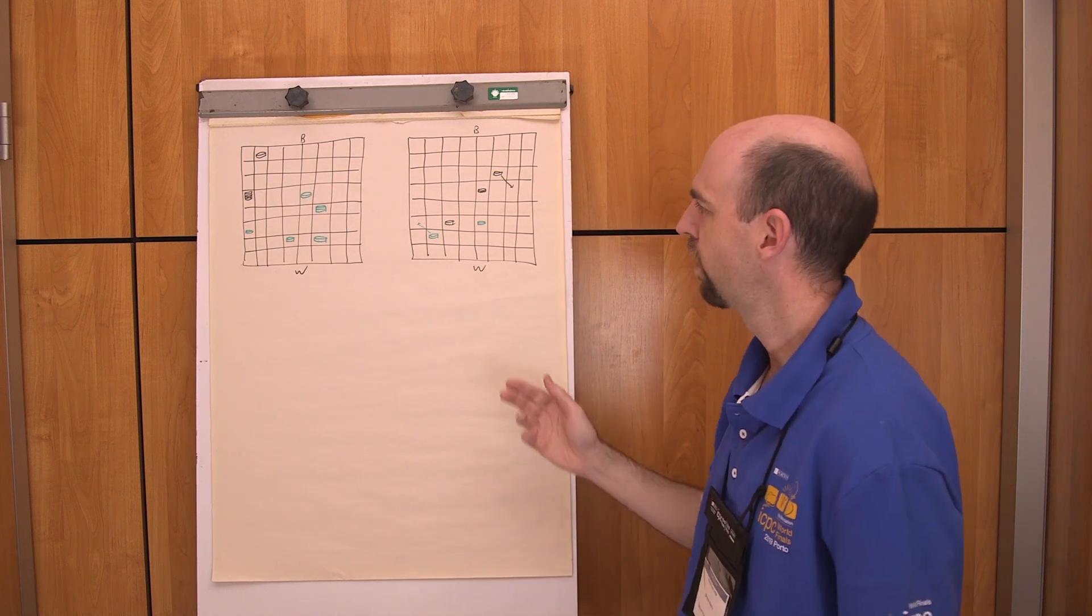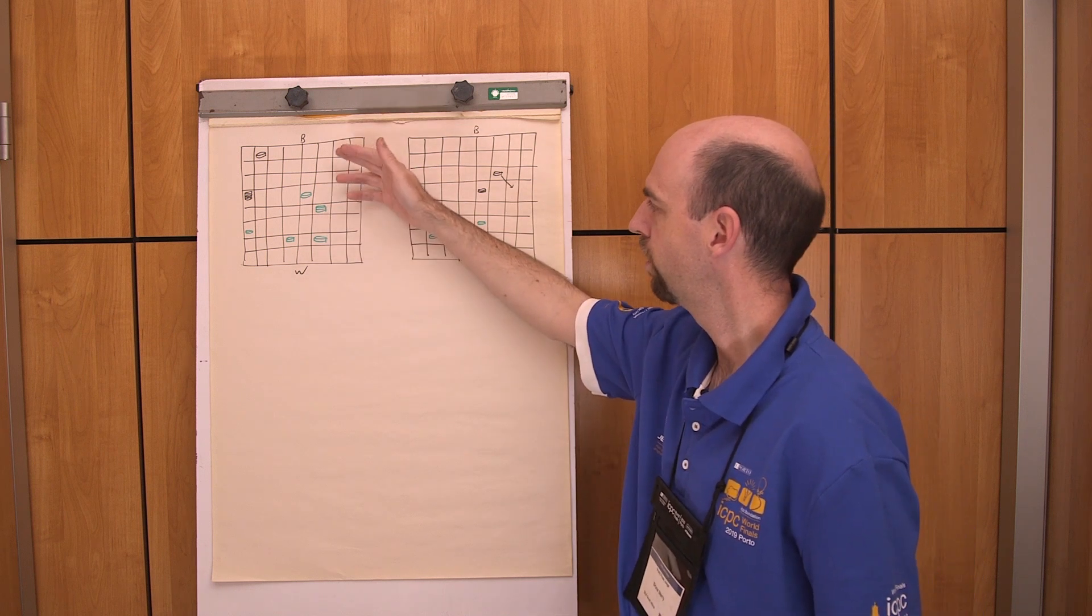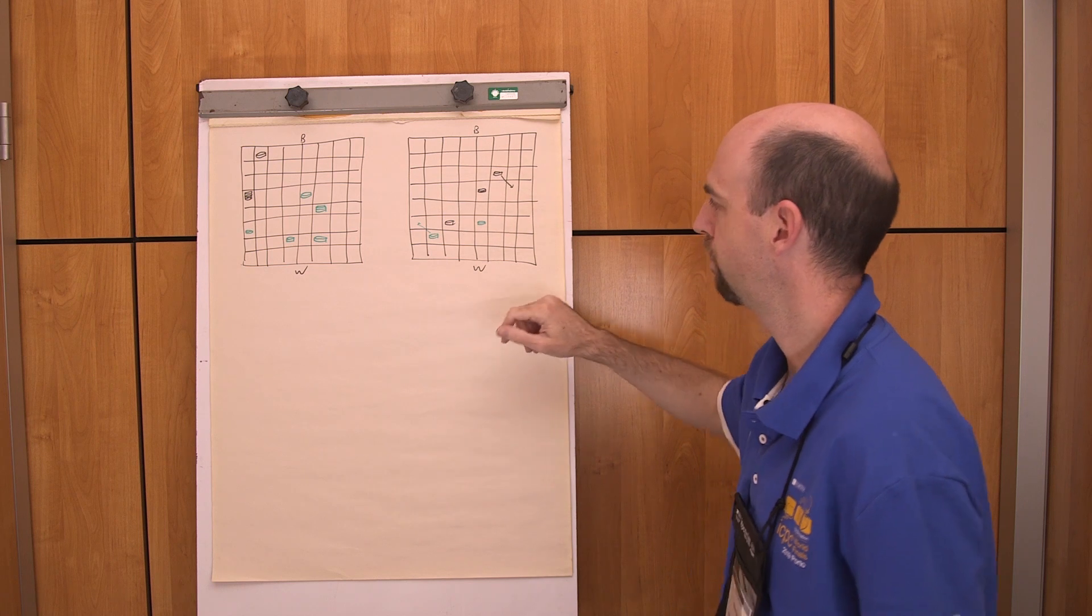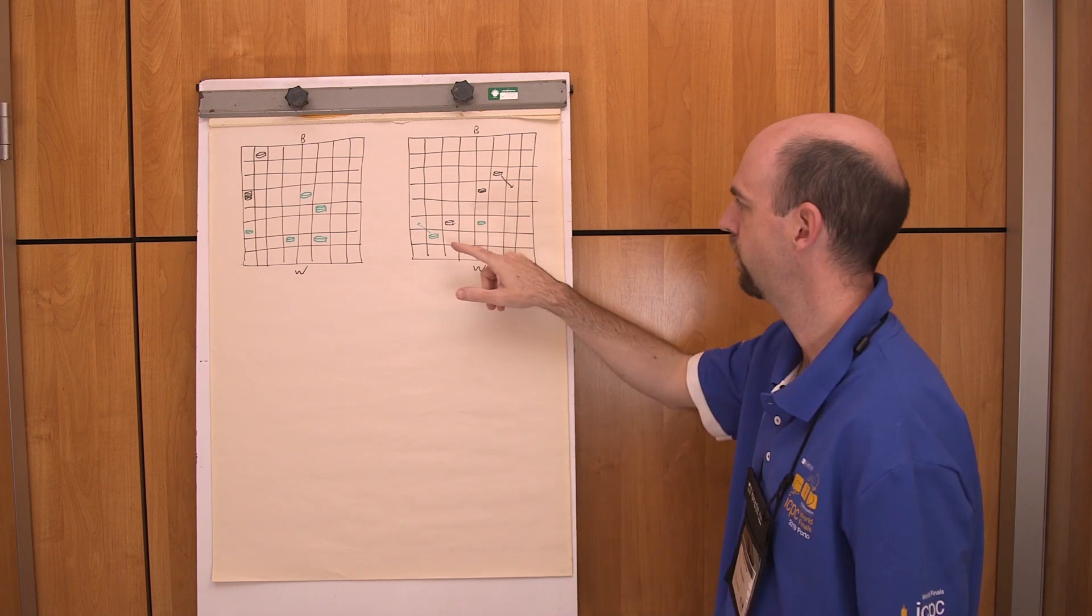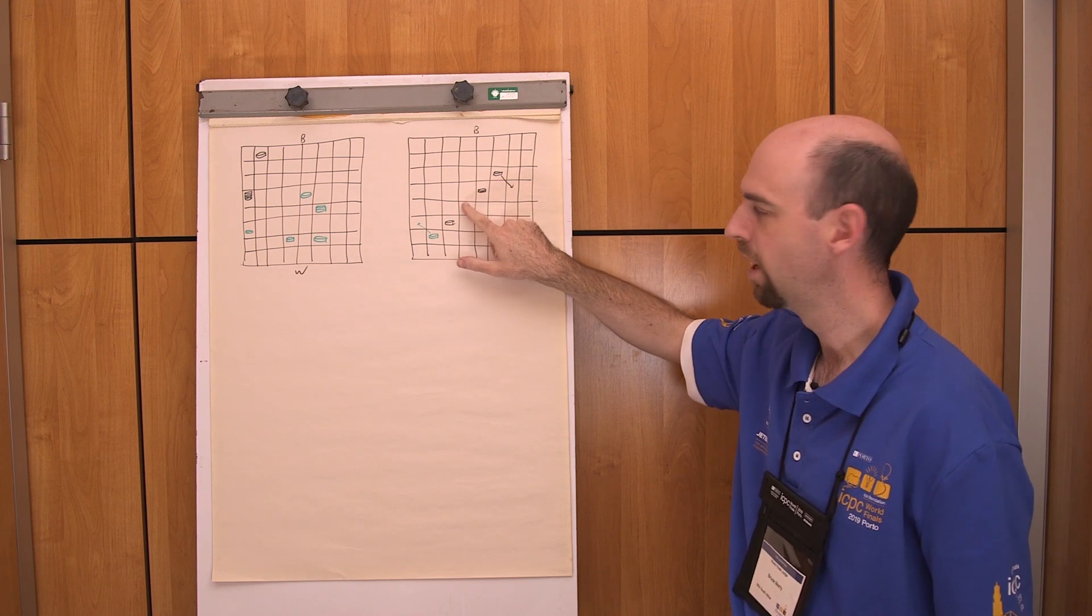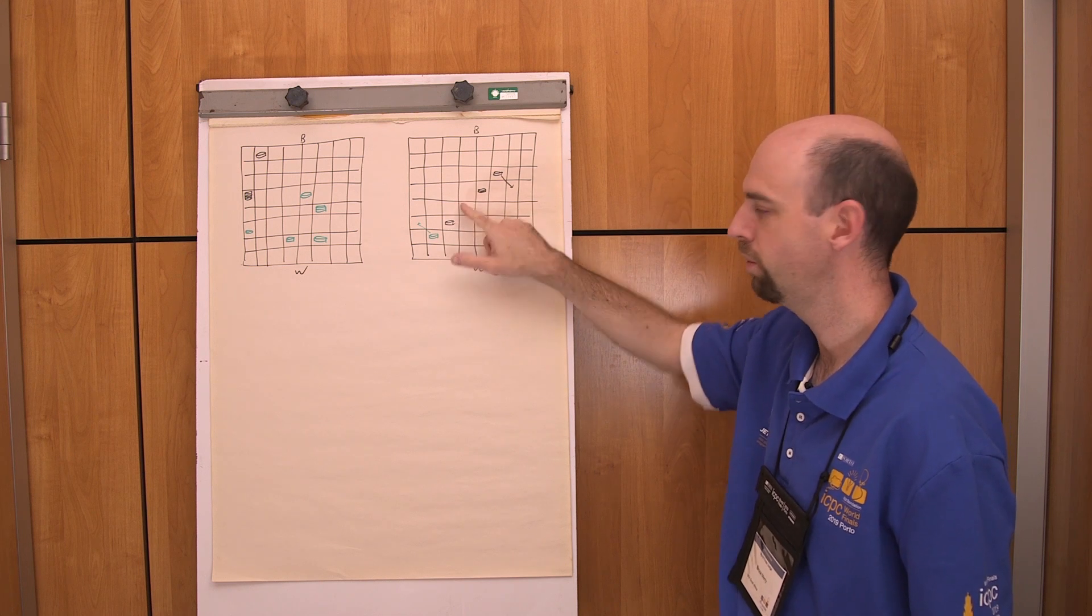A few other rules. On your turn, you can either just move a piece one space diagonally, or you can jump over one of your enemy's pieces. For example, this piece can jump over that piece to there, and that captures the piece, so it's removed.